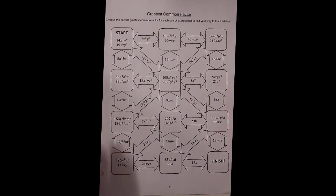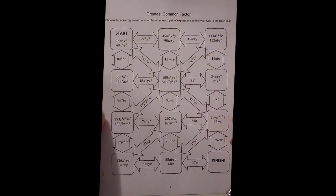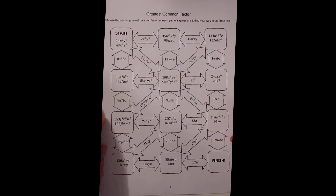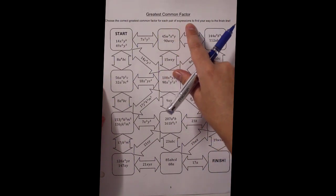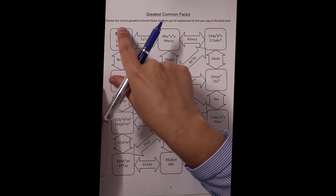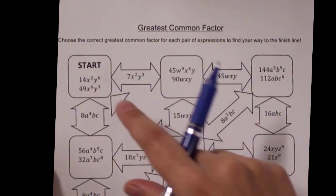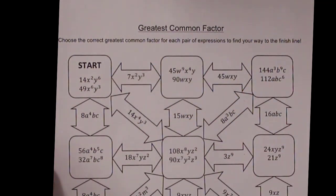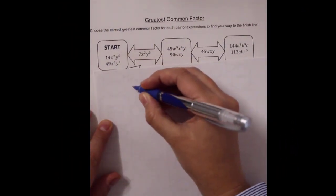Hi everyone. In this video we're going to be looking at the greatest common factor. This is page five from your handbook — greatest common factor. This is a maze we're going to complete. It says to choose the correct greatest common factor for each pair of expressions to find your way to the finish line. I'm going to write these down and then we'll start to work this out.